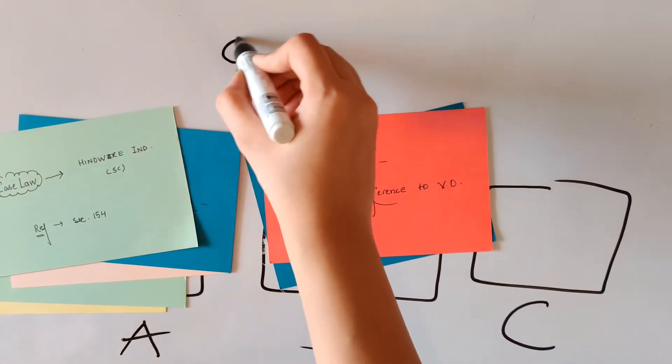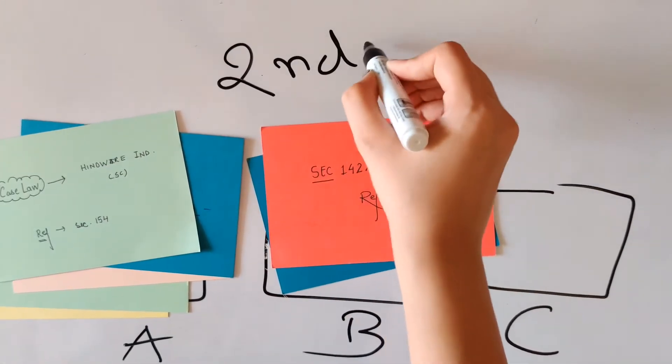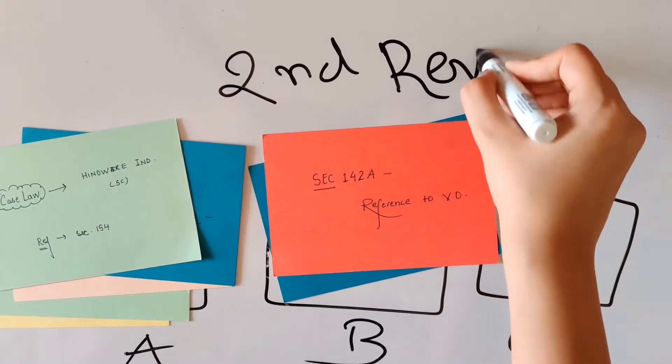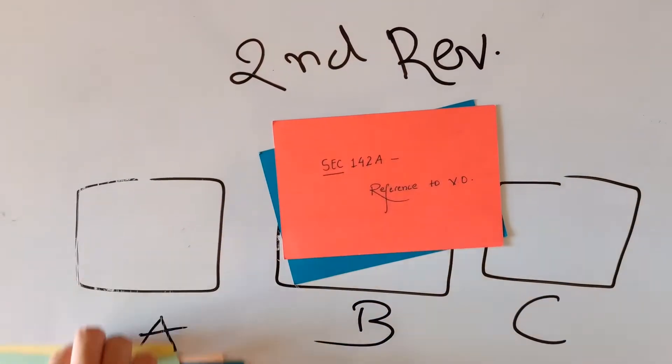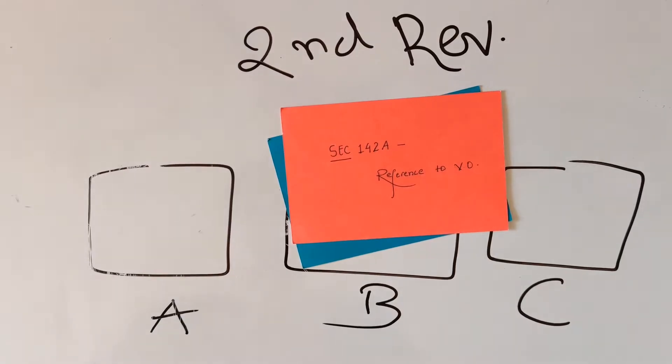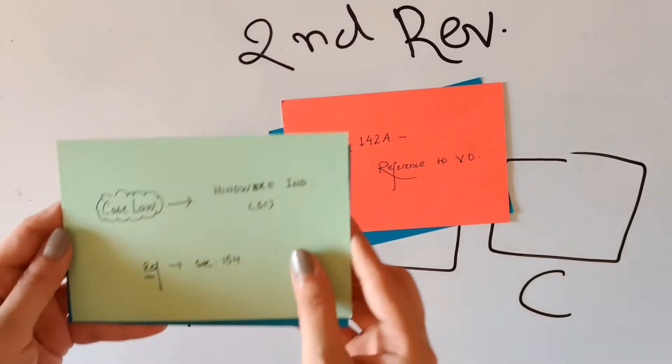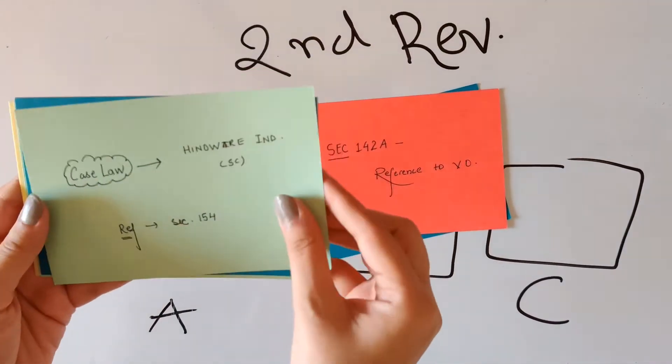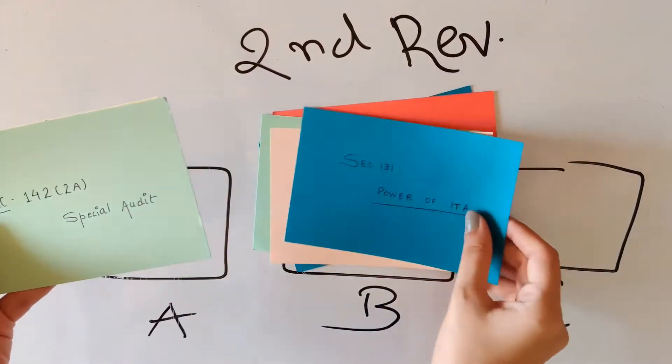Once you are through with the first revision, comes the second revision where you already have two sets of cards. Now, you have to first go through all your section A cards and try to remember and recall all of them and then again segregate them into A and B.